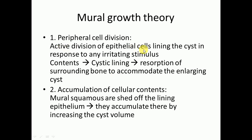There will be active division of the epithelial cell lining of the cyst in response to any irritating stimulus. The cystic lining is supported by the content of the cyst and it leads to resorption of the surrounding bone to accommodate the enlarging cyst. Second is the accumulation of cellular contents: mural squames are shed off the lining epithelium and accumulate, thereby increasing the cyst volume.